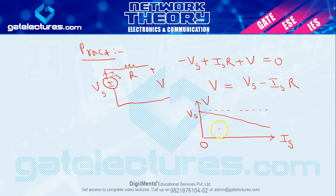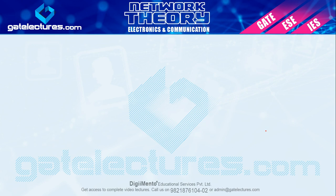Matlab practical voltage source mein kya ho raha hai? Jab aapka series resistor connected hota hai, to jo V external circuit ko milne wala hai, wo jaise jaise Is increase hoga, wo lagatar decrease hota chala jayega. To yeh difference hota hai hamaara practical voltage source mein aur ideal voltage source mein. To this is about voltage source. Agar main voltage source mein kuch cheezen aur dekh lun — kuch definitions, kuch simple circuits.